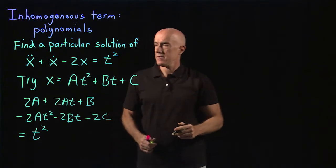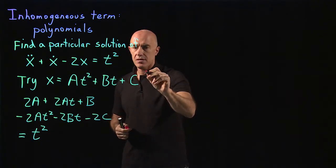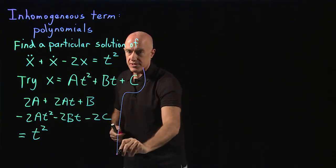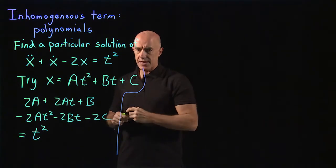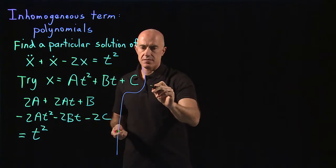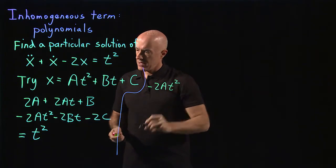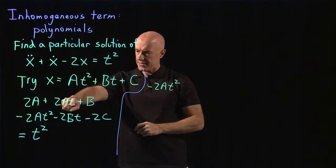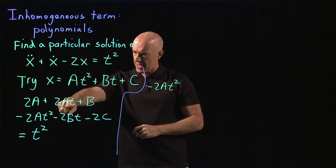What we need to do now is to collect terms so that we collect terms of the powers of t. So the left-hand side, we have a minus 2at squared. And then for the t term, we have a 2at minus 2bt, so 2a minus 2b times t.